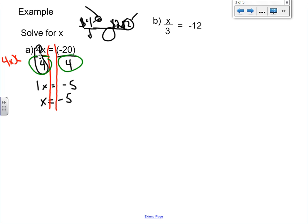For this next example, I'll write it out in my own handwriting. x divided by 3 equals negative 12. The opposite of dividing by is times by.